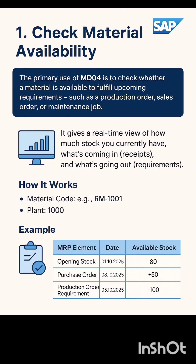In this section we will see how MD04 helps you check material availability in SAP. The primary use of MD04 is to check whether enough stock is available to meet upcoming needs — like a production order, sales order, or maintenance job. It gives a real-time view of how much material you currently have, what's coming in through purchase orders or production orders, and what's going out through reservations or sales.